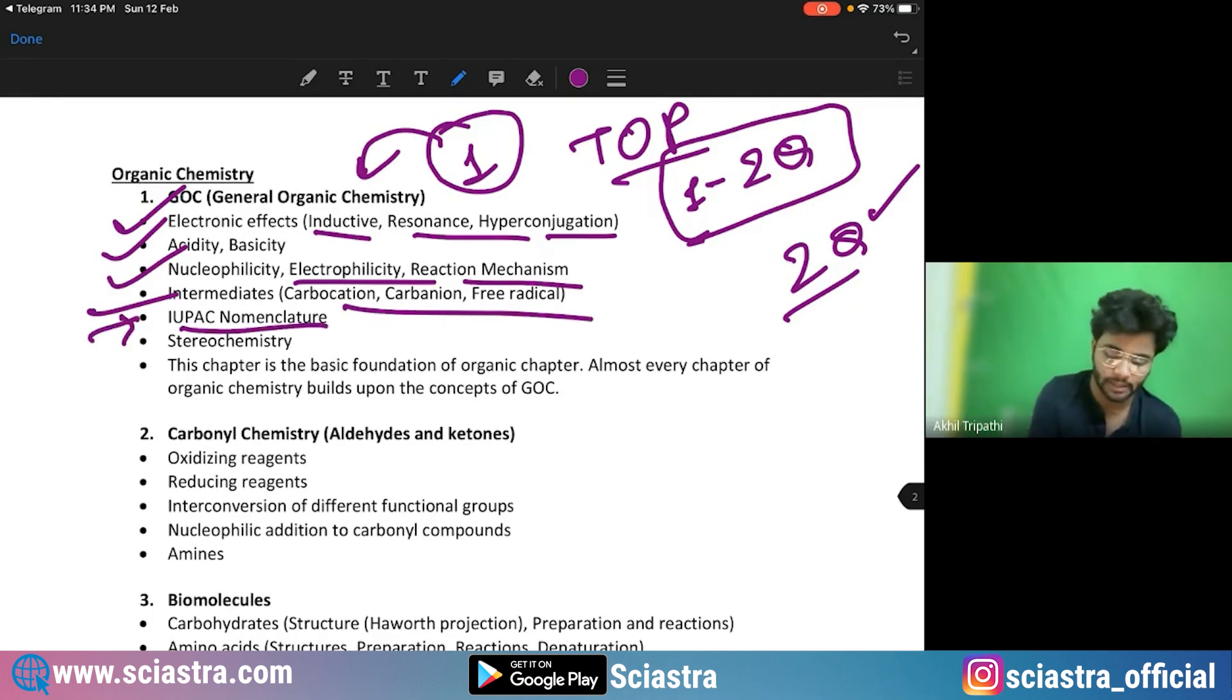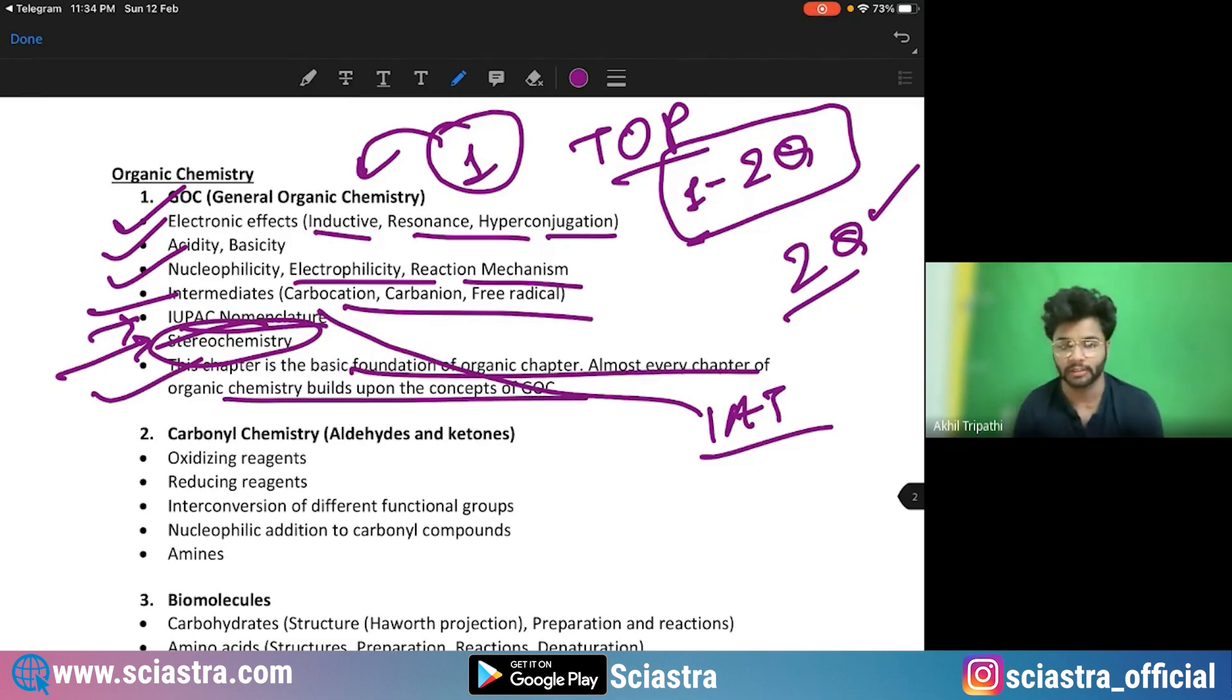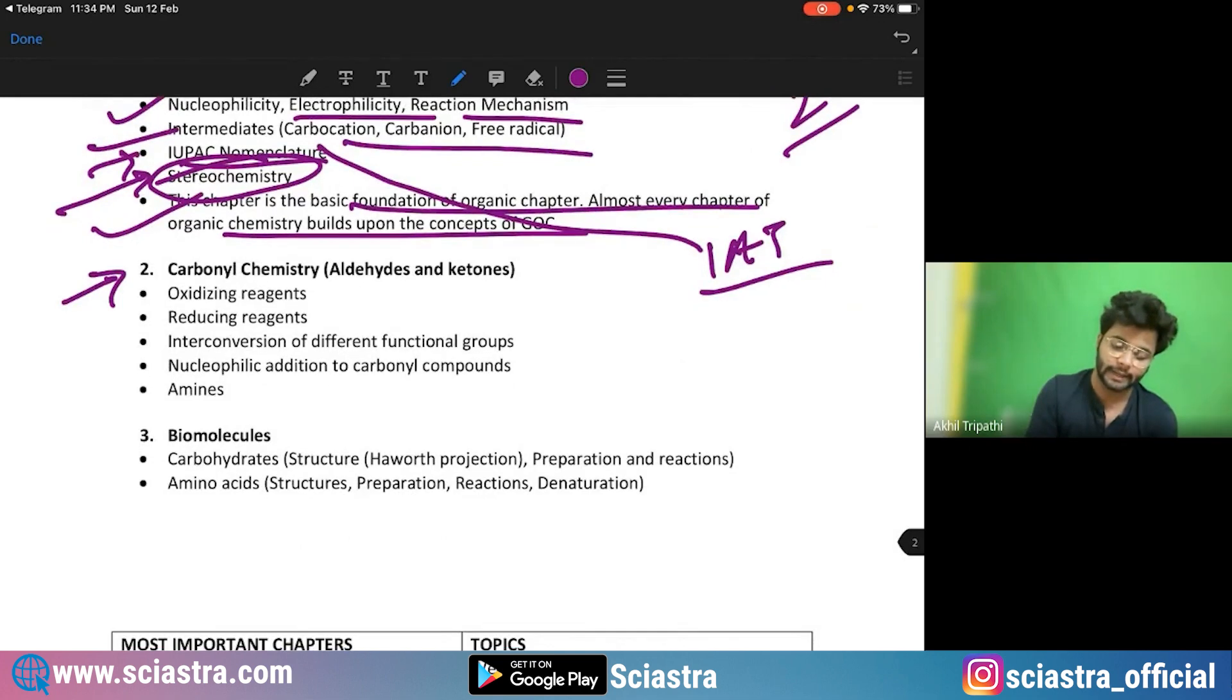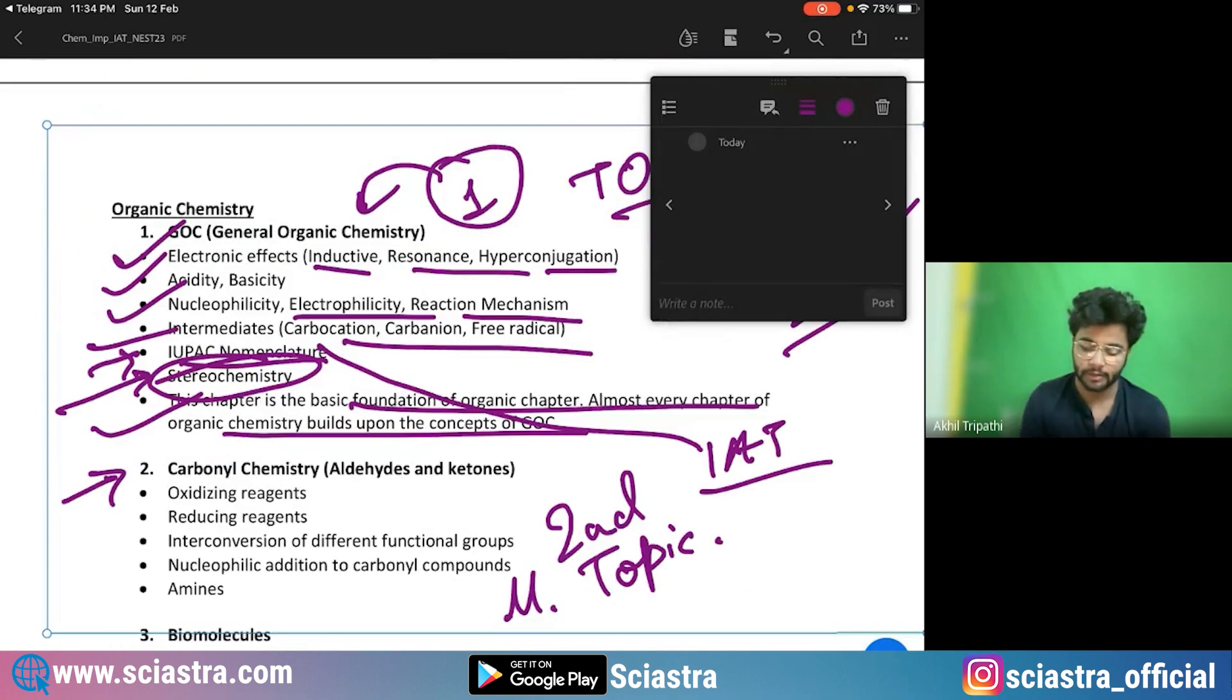And then IUPAC nomenclature. Sometimes it gets asked in IAT, generally not in NEST. Then stereochemistry, very important. This is the foundation, so you should have good understanding of GOC. Coming to carbonyl compound, this is the second most important topic. Most important topic.